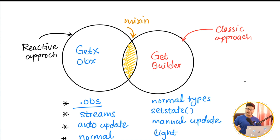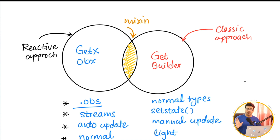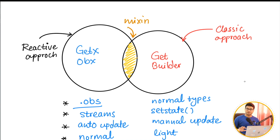Key points: the reactive approach — GetX and Obx — both use .obs. When working with the reactive widgets, you must use a .obs variable; they don't work with normal types. GetBuilder, on the other hand, doesn't work with .obs — you use a plain variable like `int x = 0`. GetX and Obx work on the concept of streams, so there's a StreamController and StreamSink behind the scenes.